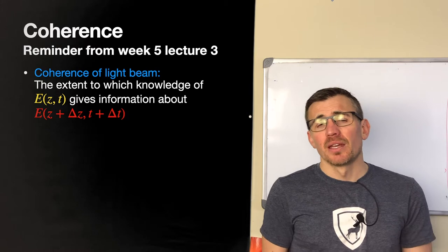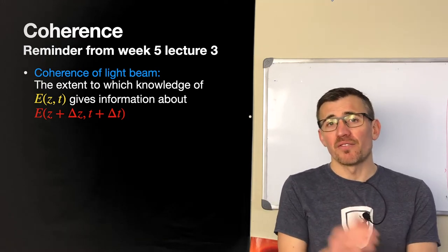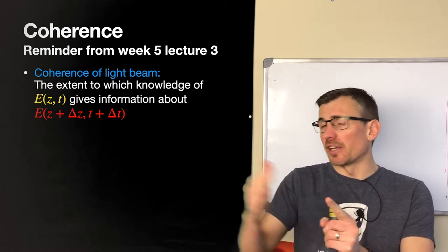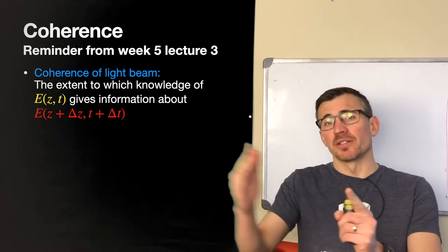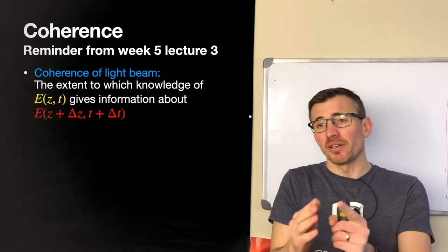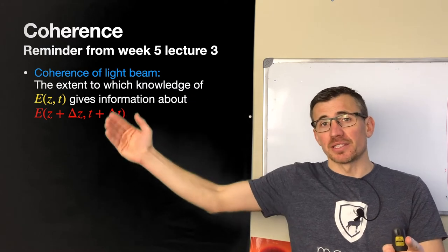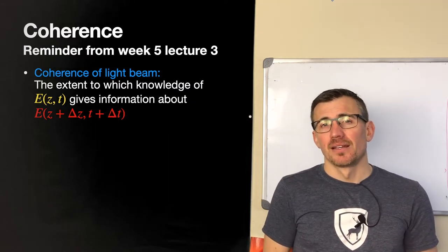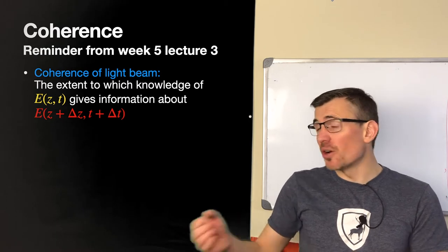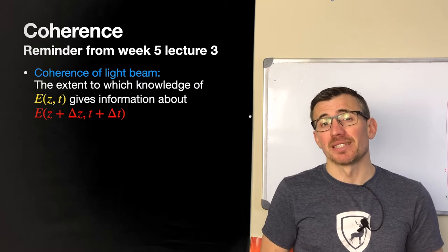Roughly speaking, coherence is the capability to know the phase of the light sometime later along the beam, either later in time or later in space. So given that you know there is a wave crest at some point, you know where the hundredth or the 500th crest is going to be later on. In words, we can define coherence as the extent to which we know the state of the beam some point later in time or in space.